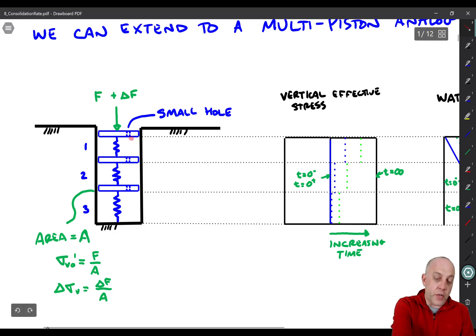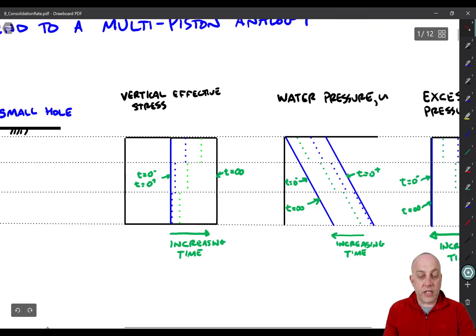So what ends up happening is that the water pressure goes down in chamber 1 first, and then in chamber 2, and then in chamber 3. And so there's this kind of lagged time based on which chamber you're in. And that's shown here.